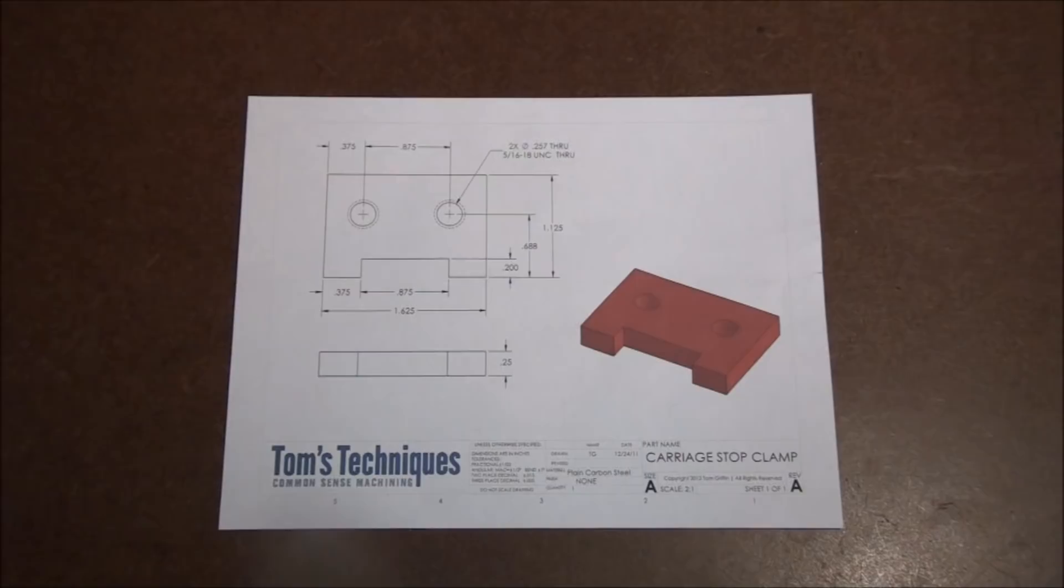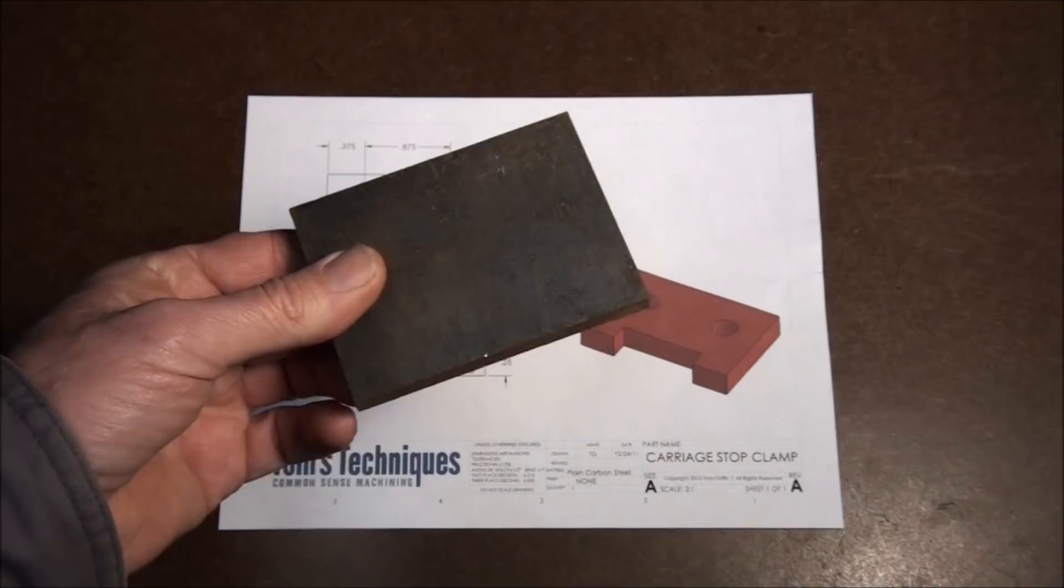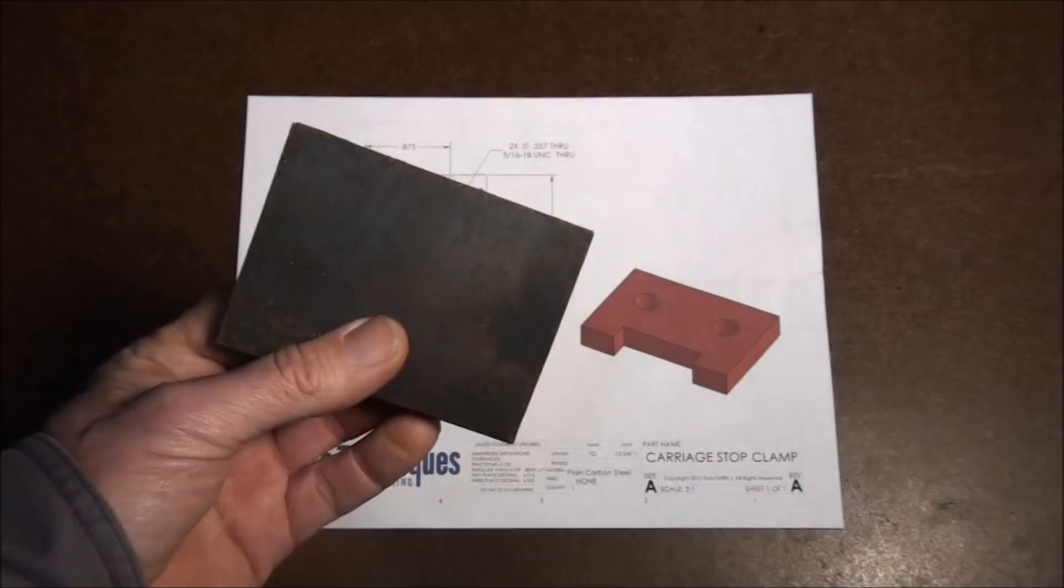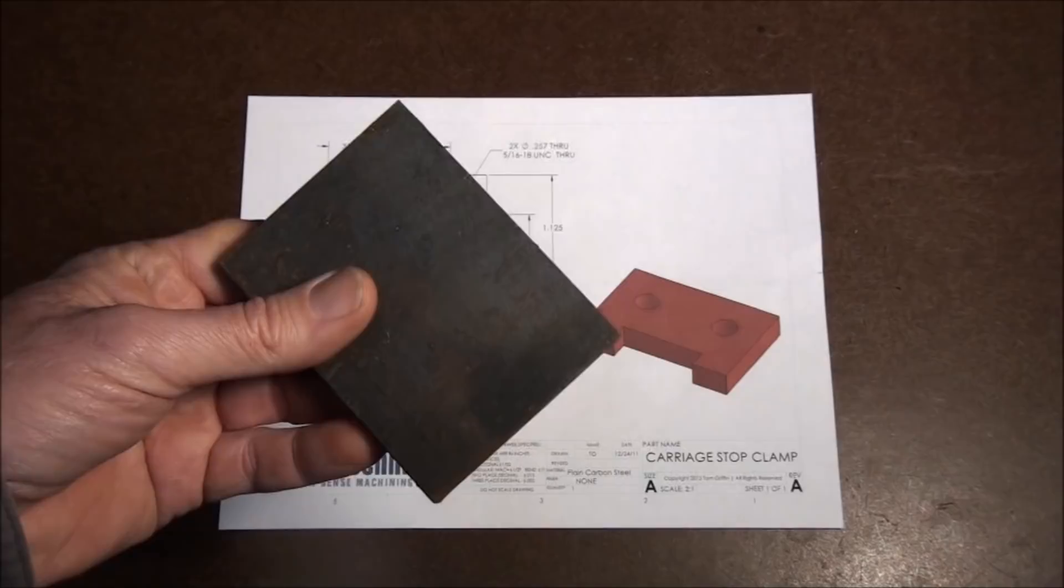So first thing we're going to do is saw out a piece of steel. Here's a piece of 3-8ths hot rolled mild steel, just going to saw out a chunk of this and start squaring it up in the mill. So let's get over to the band saw and get started.